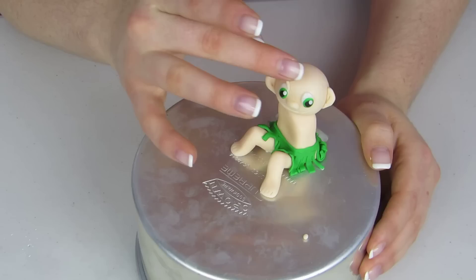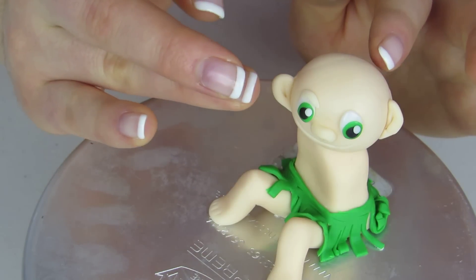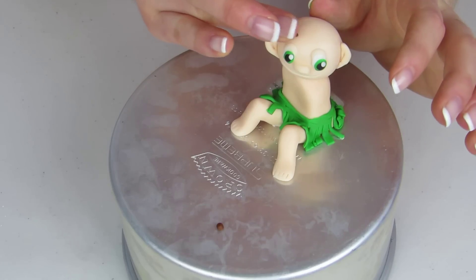And then I'm gonna use a little piece of skin-tone fondant just to give him an eyelid. And some brown fondant to give him some eyebrows.